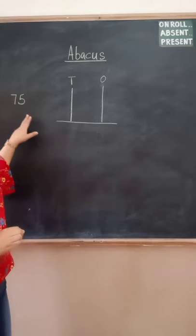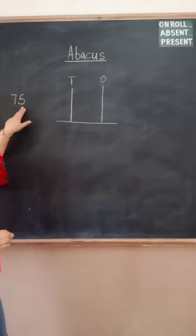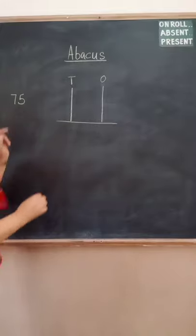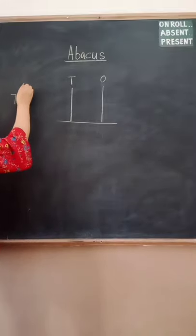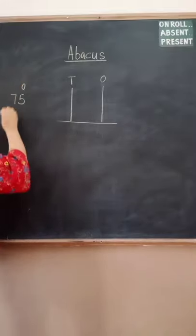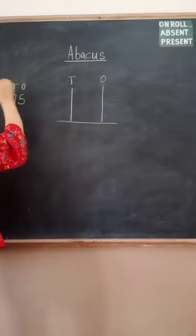So first thing first you will give these numbers also the place value. The place value of five will be ones and the place value of seven will be tens.